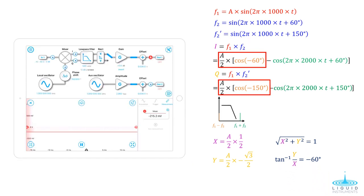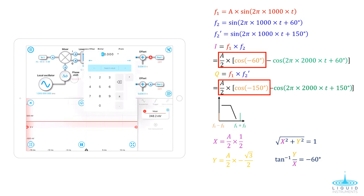Moku Lab's lock-in amplifier instrument implements dual-phase demodulation. A simple tap switches between rectangular or polar. In R-theta mode, you can see the R is not affected by the phase difference between the LO and the input signal. And the theta can be used to directly monitor the phase shift of the input signal and the reference LO.